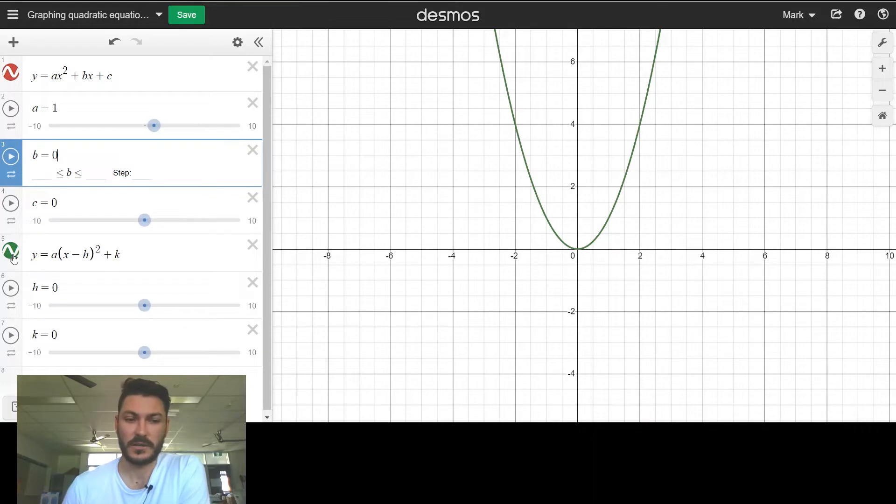First, I want to show you that if I click the green parabola off, the red one appears in its place. That's because with the variables set up the way they are—when a is 1, we've just got x squared, and when b and c are zero, it's just y equals x squared. For the green form, when h is zero and k is zero and a is still one, the equation is also y equals x squared, which is why they match at the start.